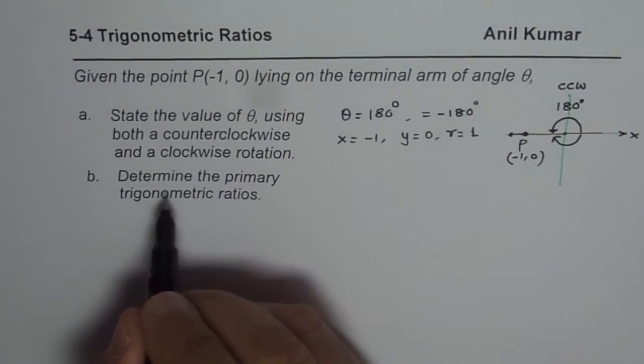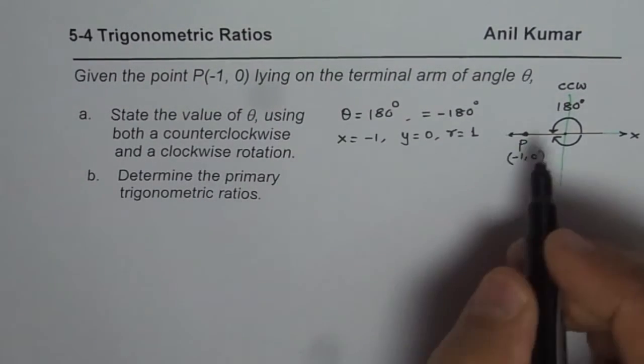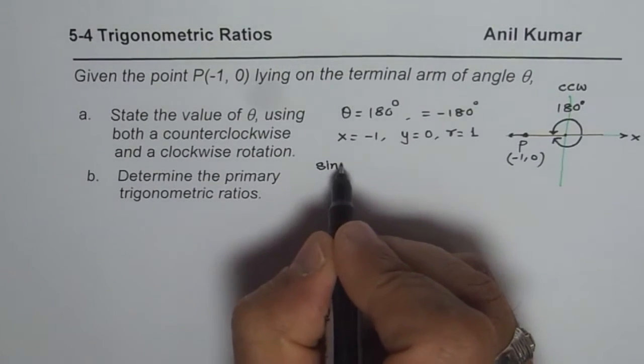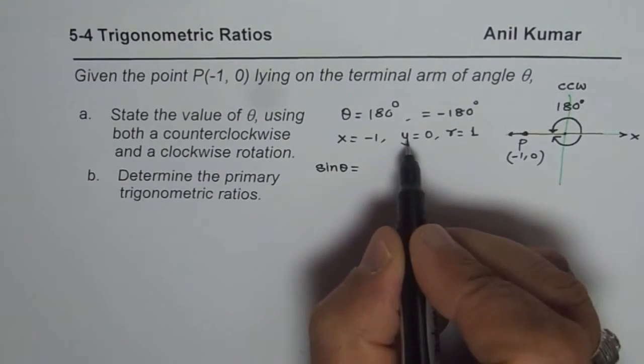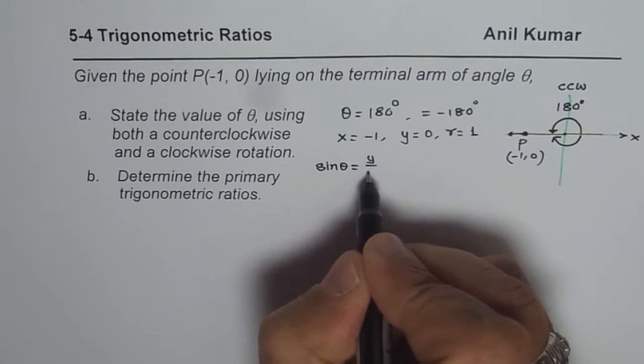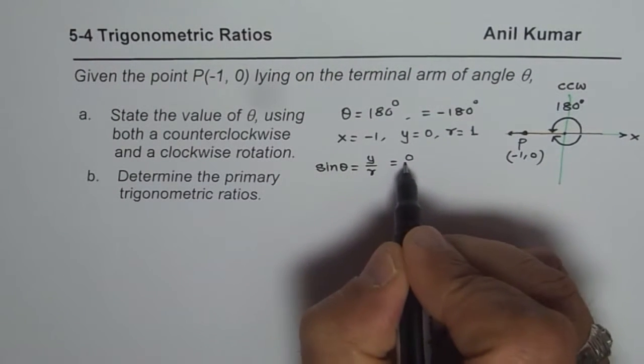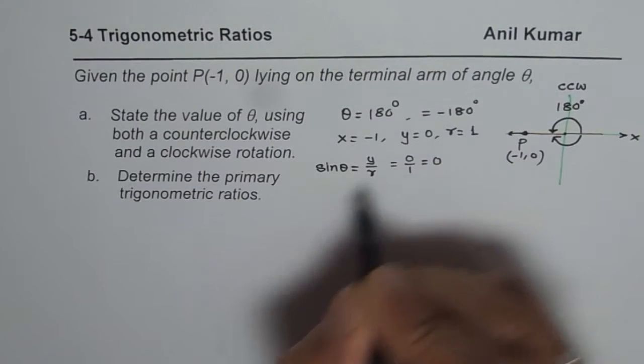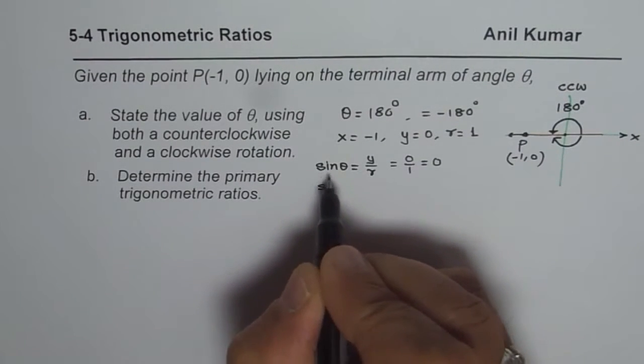Now to find the primary trigonometric ratios, we can say that sin theta equals the y value, the height, which is 0 in this case. It is y over r, which equals 0 over 1, and that is 0. Sin theta is 0.